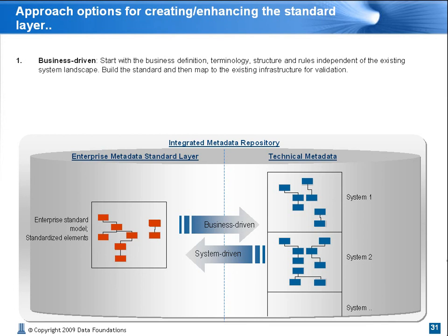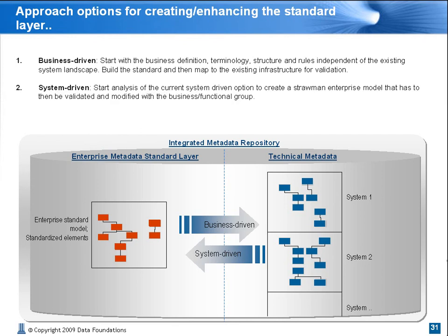The key is to retain the analysis, and the standard is the residue that automatically builds as part of the process. Firstly, business-driven — this is where we start with the to-be without any as-is implementation: definitions, structures, processes, and then validate against what we have, kind of like a plus view. System-driven is where we analyze the systems to come up with potential options to structure, define, and govern a subject area, and we validate it with the business users. You have to do both — the difference is from which point do you begin.